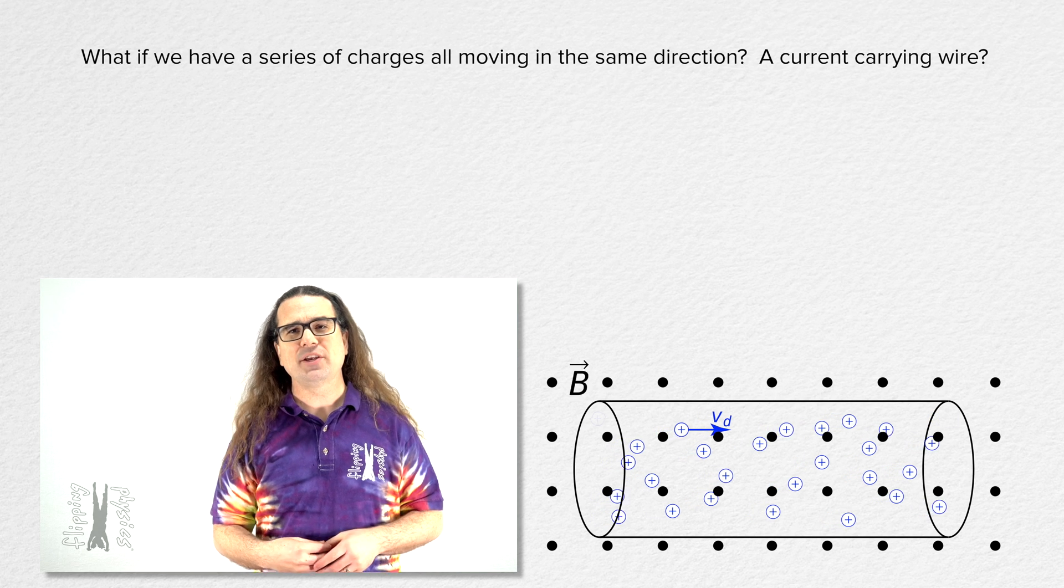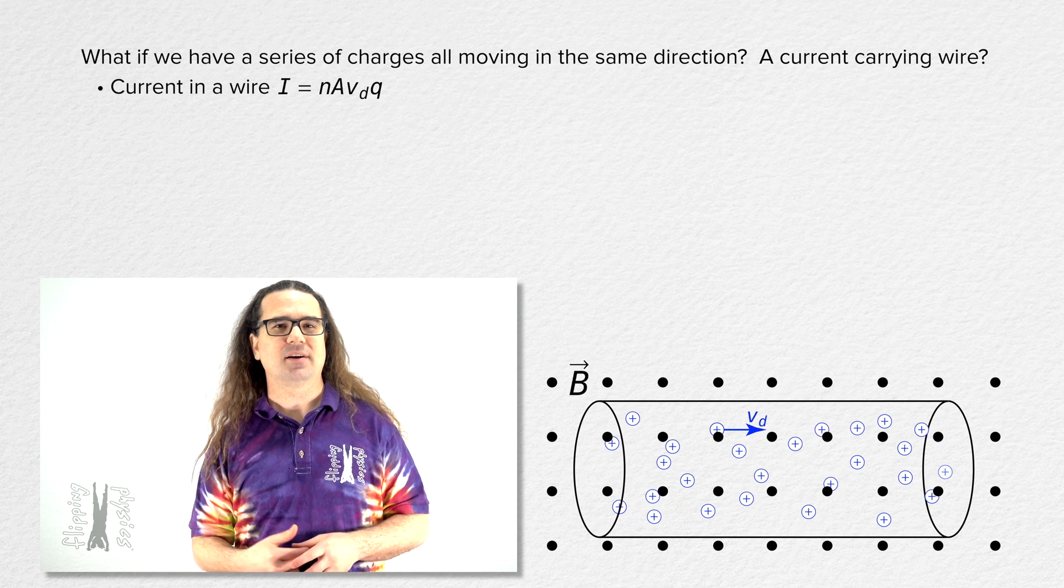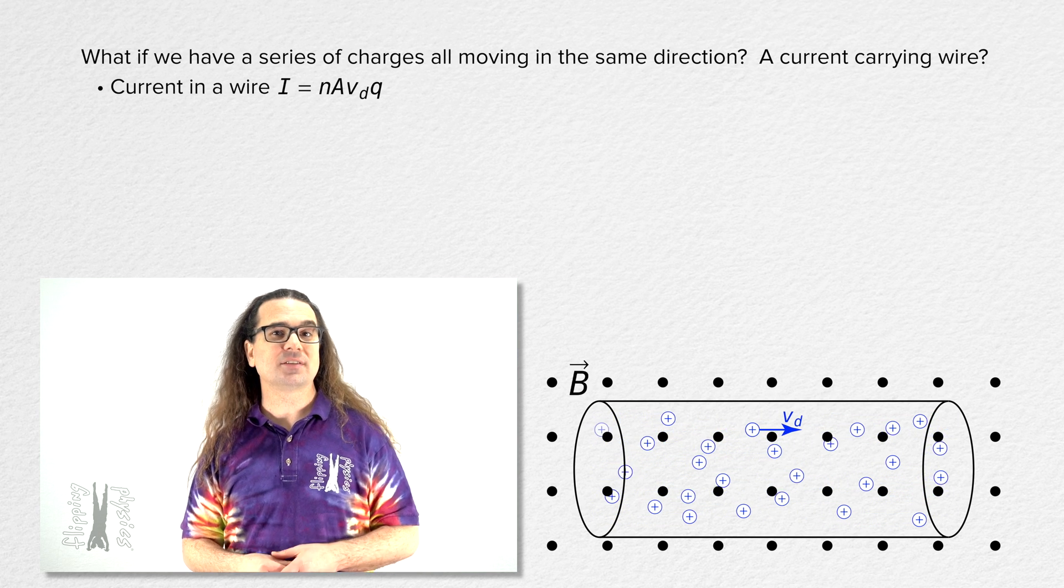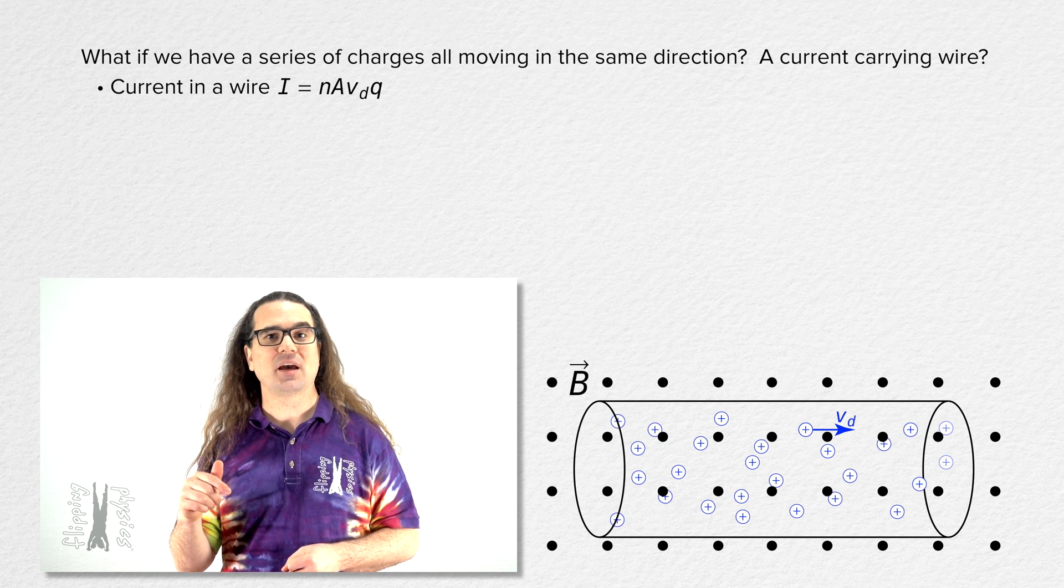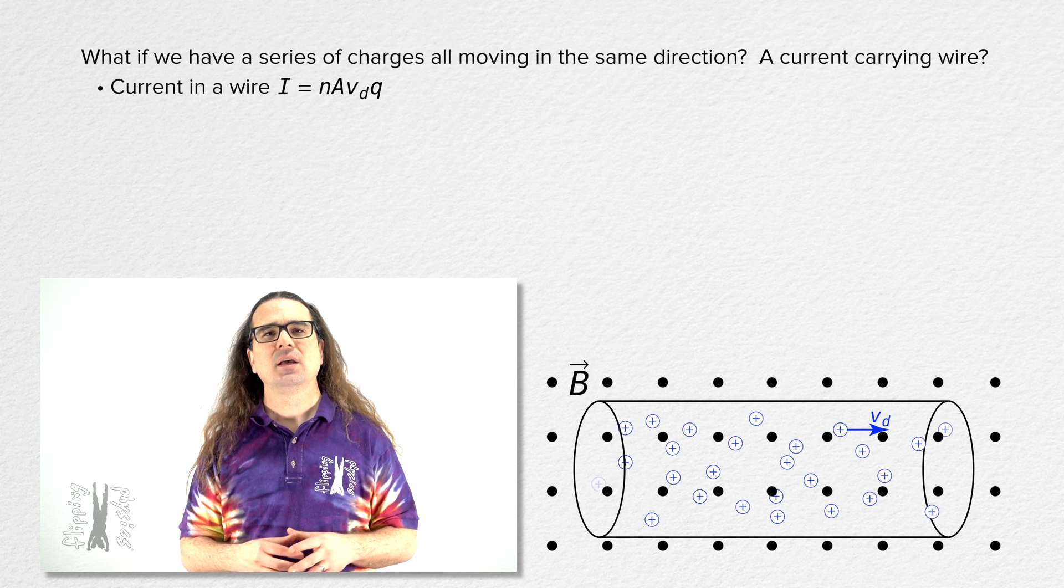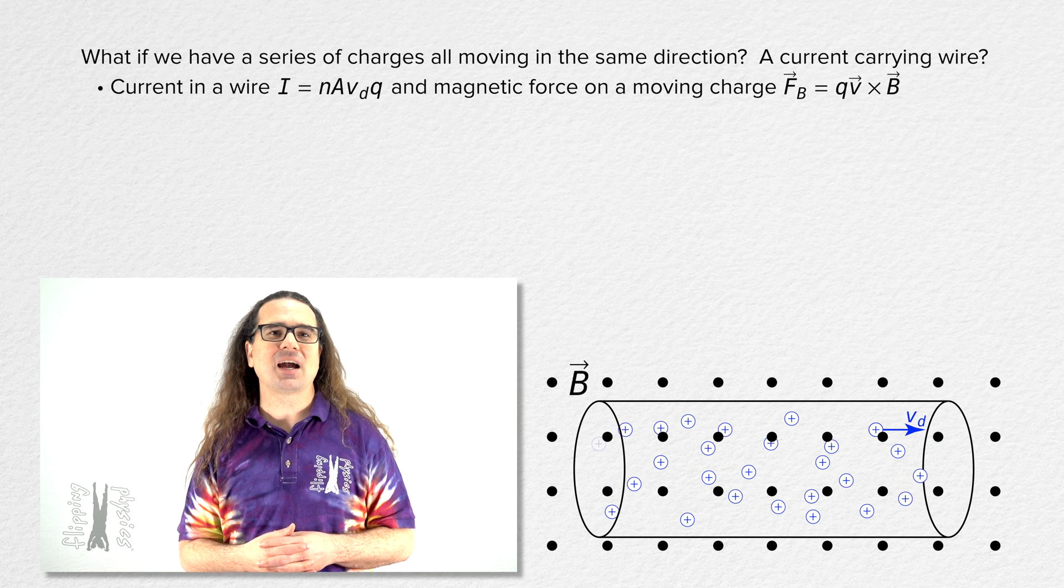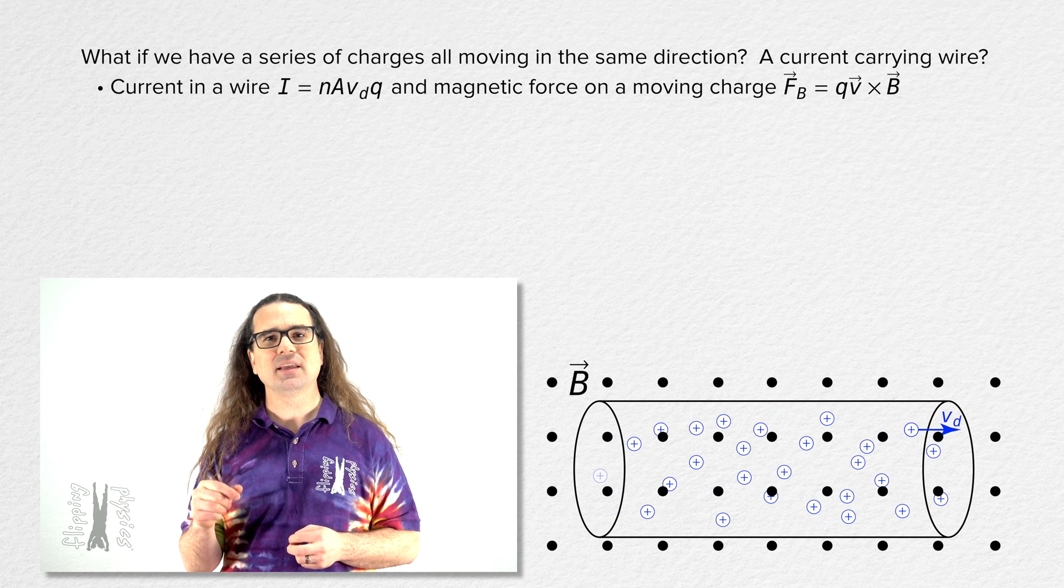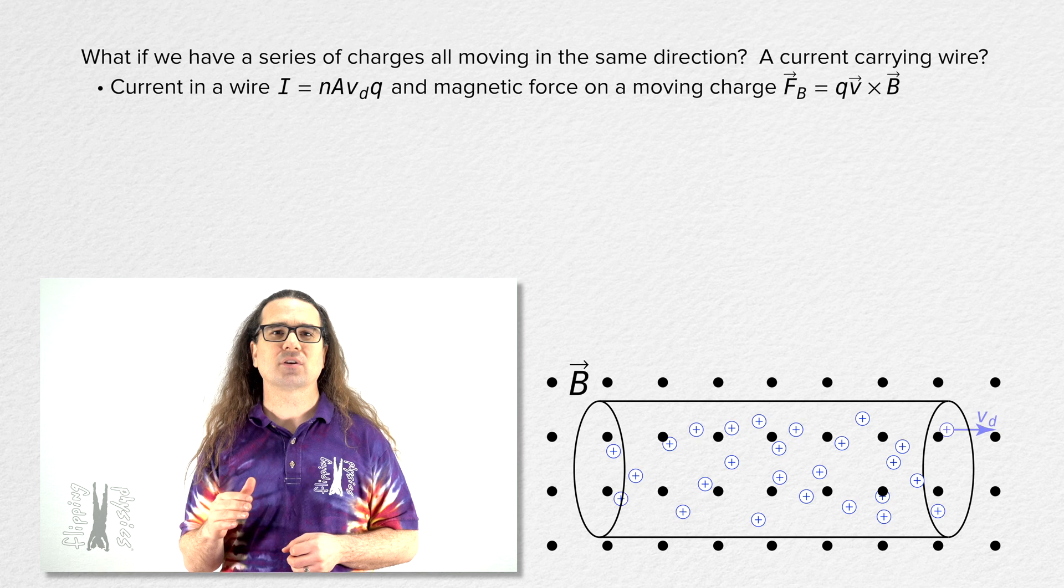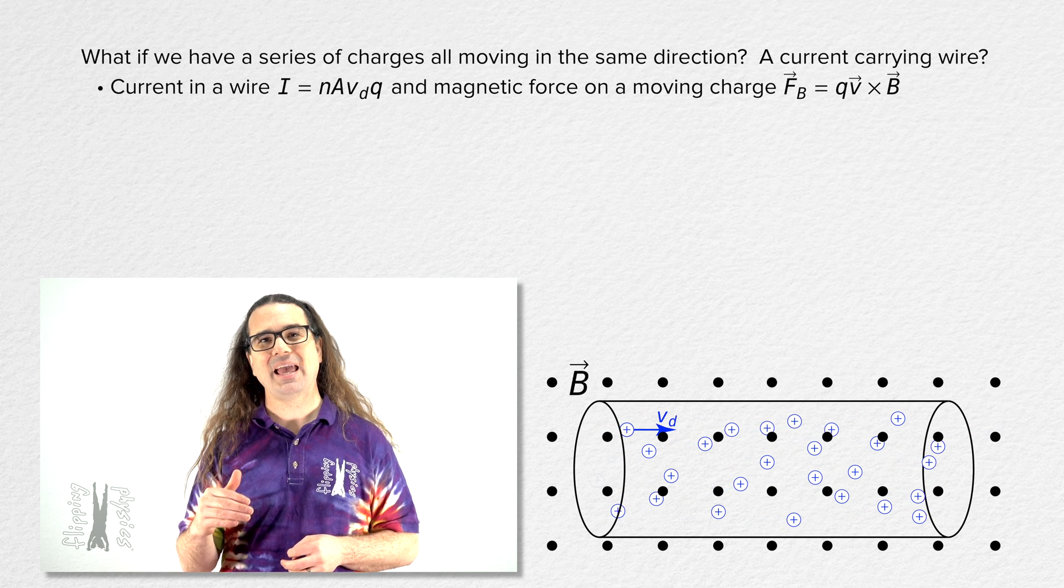We already derived the equation for the current in a wire. It equals charge carrier density times cross-sectional area times drift velocity times charge per carrier. And we know the magnetic force acting on each individual charge moving in a wire. Magnetic force equals the cross product of charge times velocity and magnetic field.